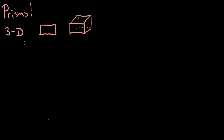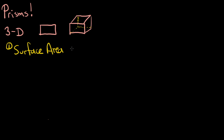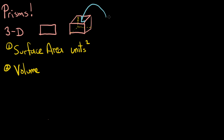We're going to take a look at the surface area of a prism first, and the next part is going to be the actual volume. Surface area is going to be in units squared — that's pretty important to know. And when we're talking about volume, if I took this rectangular prism and filled it with water, that's what we're talking about — the volume. And that's going to be in units cubed.